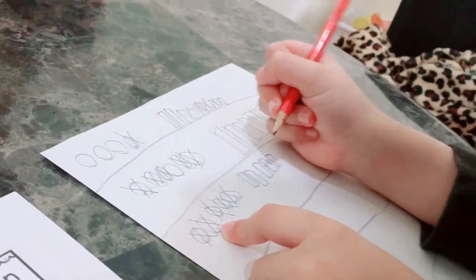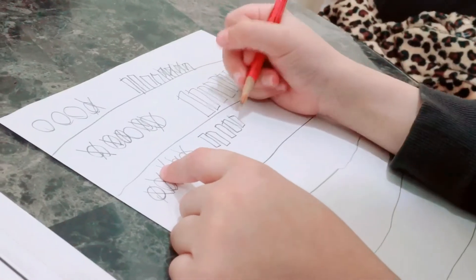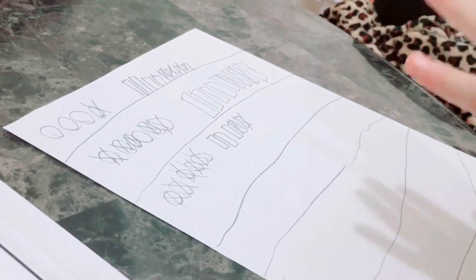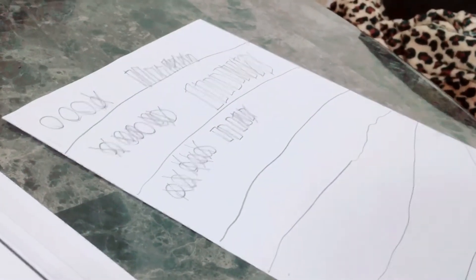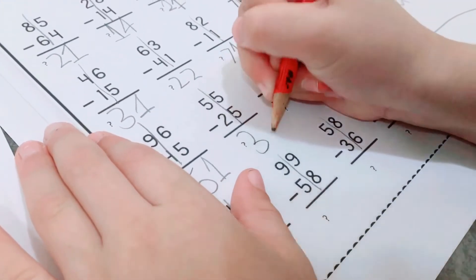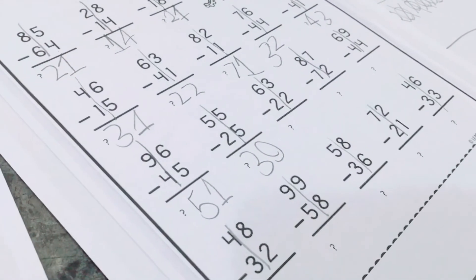10, 20, 30, 40, 50, that's five. So now we have to take away two, so that means it's 30. Yeah, that's 30. So 55 minus 25 is 30.